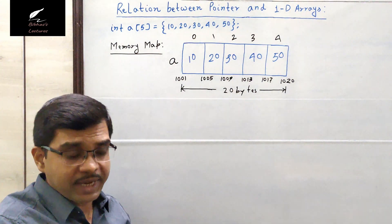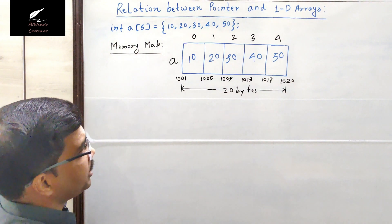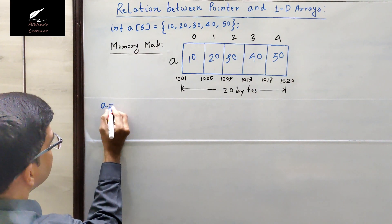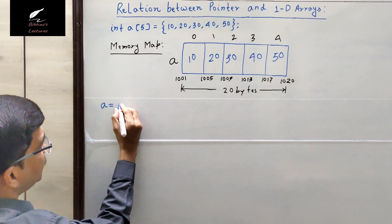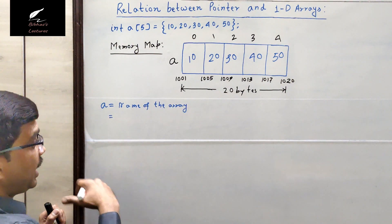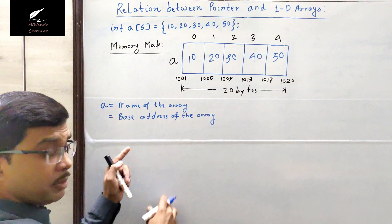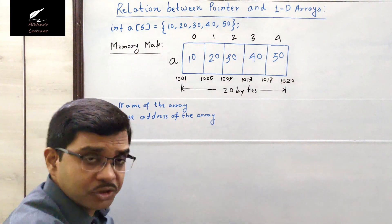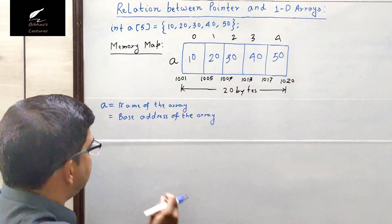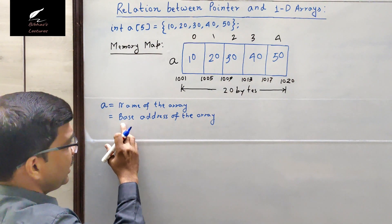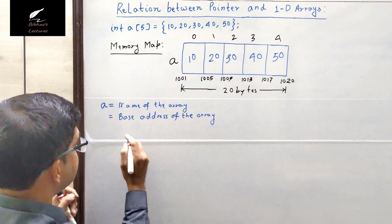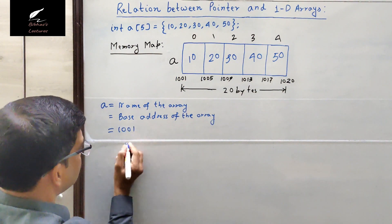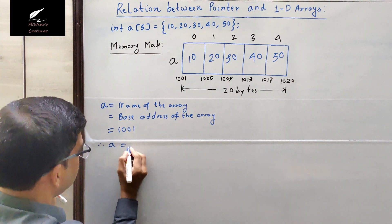If we only mention the name of the array, the name is 'a'. The name of the array is also the base address of the array. Whatever the dimension, if you just mention the name of the array it will always give you the base address, which is the starting address. Here the base address is 1001, so the value of 'a' is 1001.